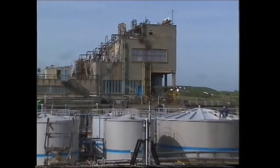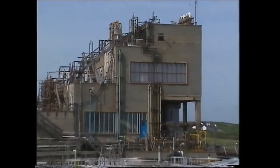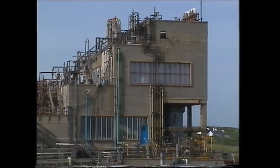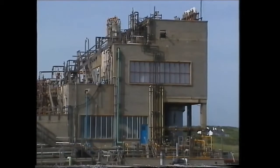The primary acid liquor is next pumped to the steaming out tower. It enters the top of the tower where it's treated with chlorine and steam. This releases the bromine as a vapour which is then condensed to form a liquid.